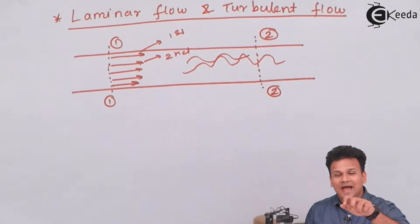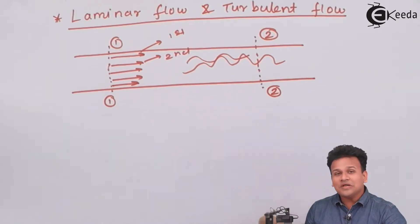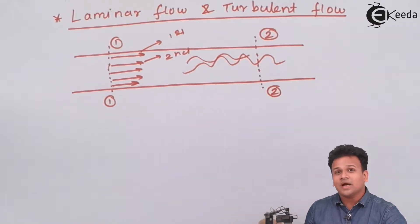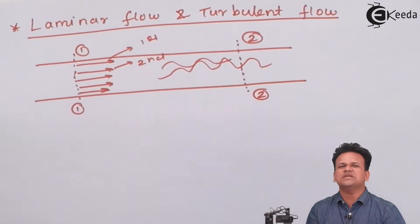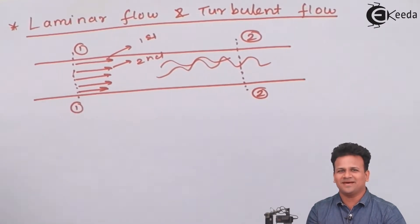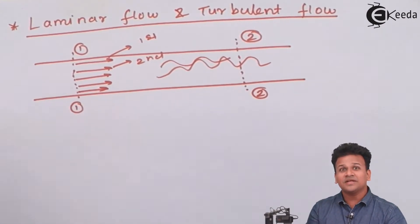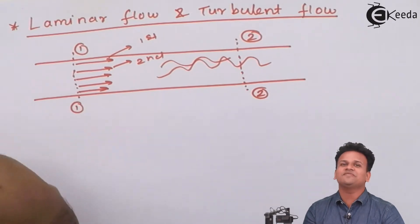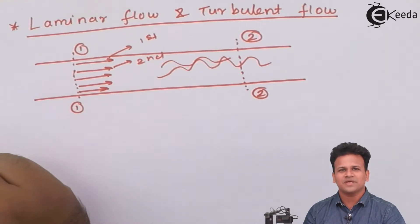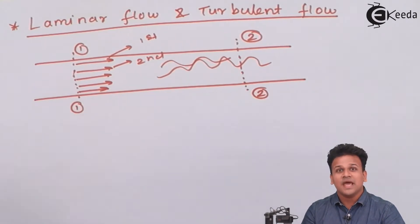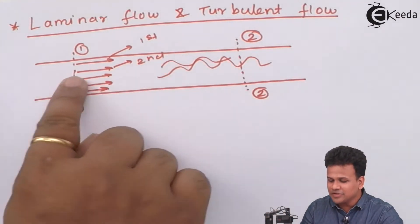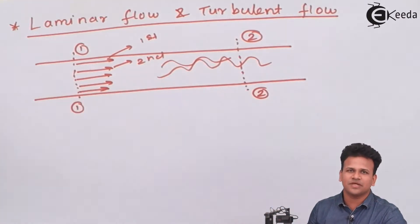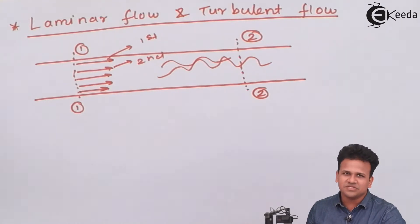If you gradually close the tap, you can see the color of the liquid changing to colorless. That means it is transitioning from turbulent flow toward laminar flow. In laminar flow, the adjacent layers of the liquid do not mix with each other.